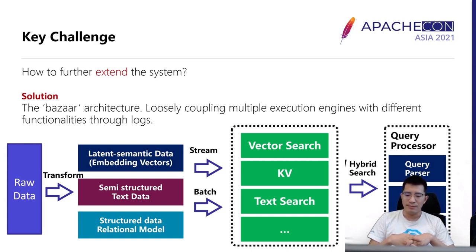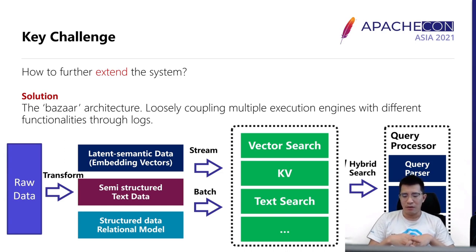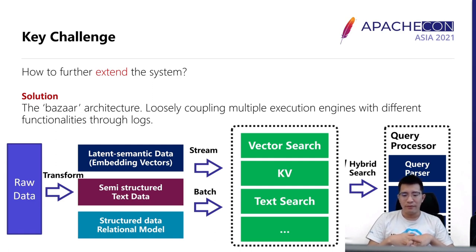We call this the bazaar architecture because it supports multiple execution engines, and all those different engines just consume data from the log broker independently. When a query comes in, the query processor is responsible for parsing the query, generating logical and physical plans, and scheduling executions. Once all executions are done, we have a uniform reducer which aggregates all the data and performs the ranking.